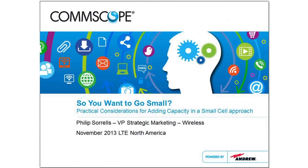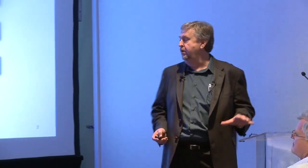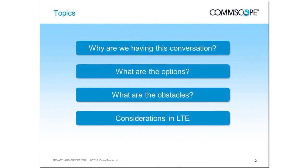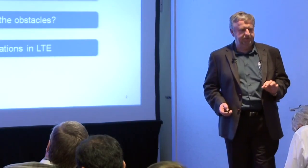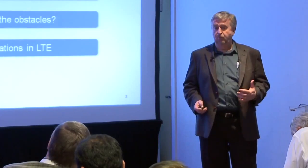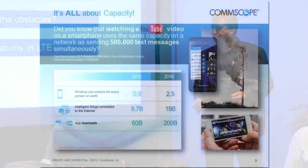So you want to go small. What are some practical ideas, some things that need to be considered as you think through the question of how you go small with filling your capacity needs? Specifically, four different approaches for going small. Then I want to talk about four different obstacles that, no matter what path you decide to take, always have to be dealt with. And last, some specific things related to LTE you should consider as you implement your small cell strategy.